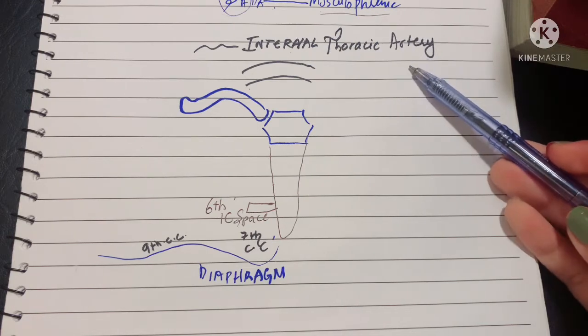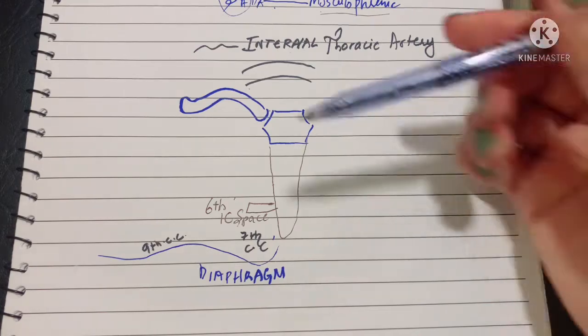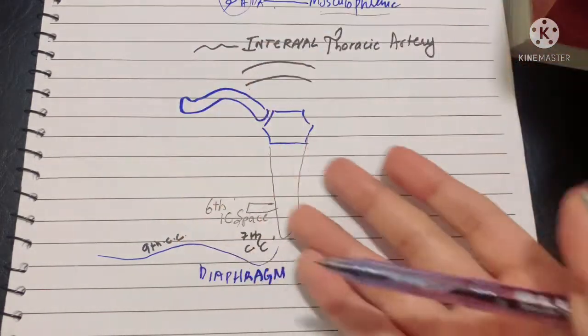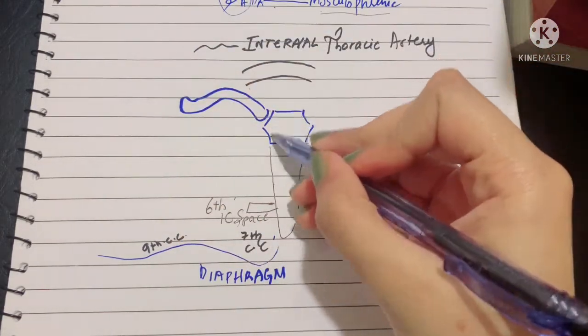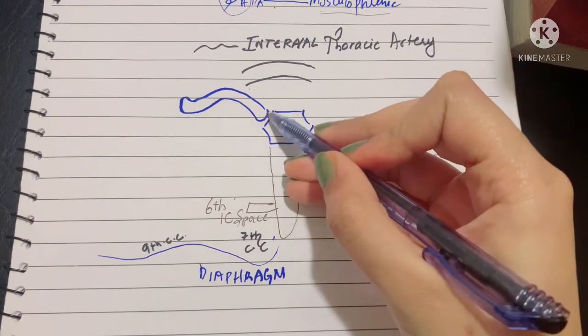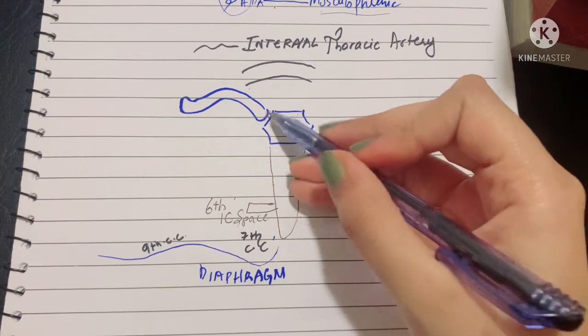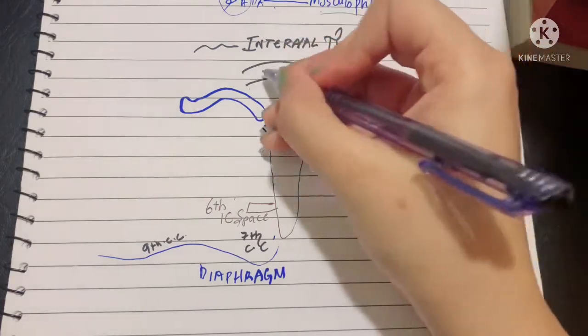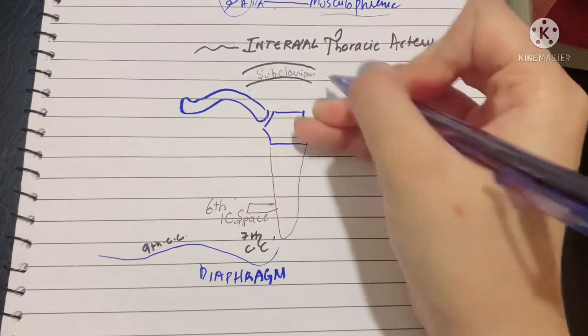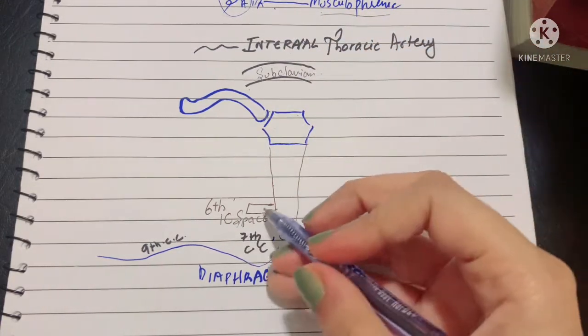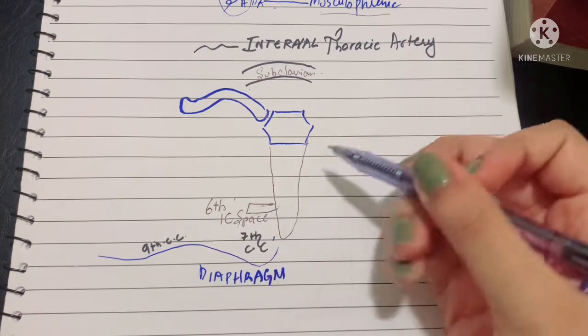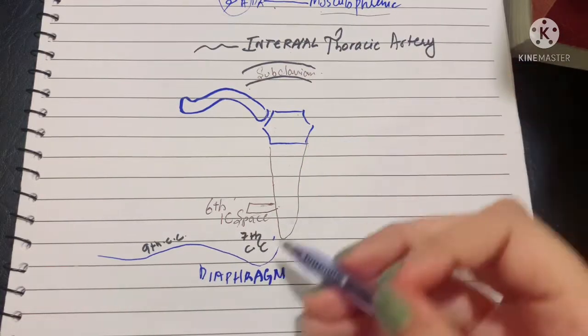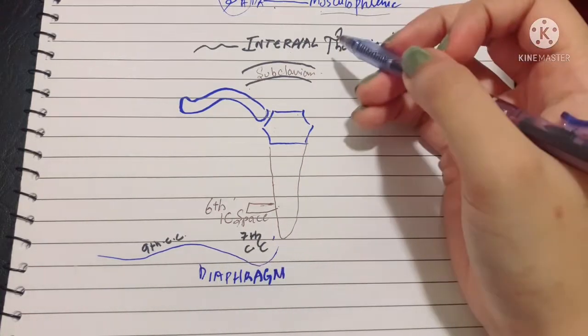It mainly lies in your anterior thoracic wall. Let me give you orientation of the figure: this is the manubrium, the sternal end of the clavicle forming the sternoclavicular joint, this is the subclavian artery, the sixth intercostal space, the sternum, and the diaphragm. Let's begin the discussion.